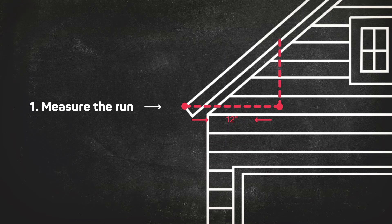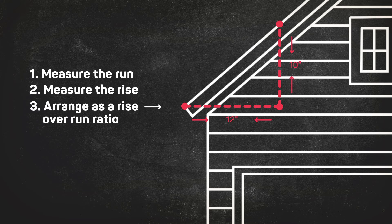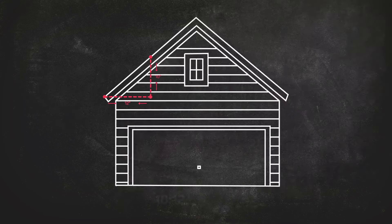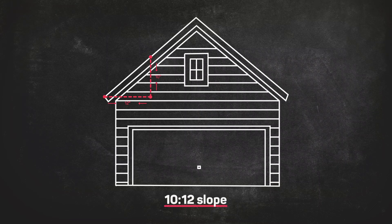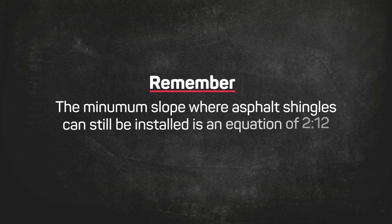Next, take that point at the 12-inch mark and measure up vertically to the roof. This is your rise. Arrange into a rise over run ratio and you've successfully measured your roof slope. Additionally, always remember that the minimum slope where asphalt shingles can still be installed is 2/12.